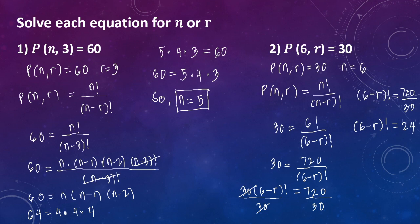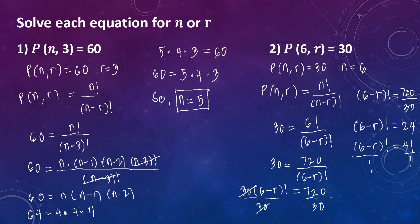So yung 24 is equal to 4 factorial, so ito ay magiging 6 minus r factorial equals 4 factorial. I-divide both sides natin ng factorial para matanggal yung ating factorial — cancel na natin yan. Ang matitira na lang ay 6 minus r equals 4.